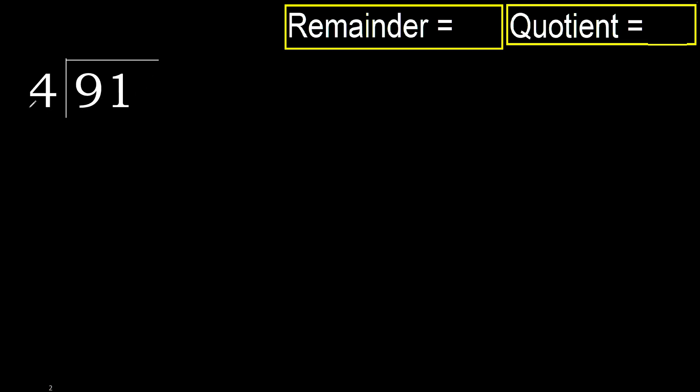91 divided by 4. Starting with 9: 4 multiplied by which number is nearest to 9 but not greater? 4 multiplied by 3 is 12, which is greater. 4 multiplied by 2 is 8, which is not greater.